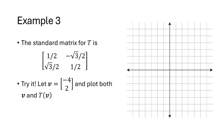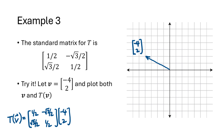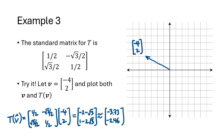Let's verify this. We plot the vector (-4, 2), multiply it by this matrix, and see where we get after rotating 60 degrees counterclockwise. Multiplying gives the result (-2 - √3, 1 - 2√3), which is approximately (-3.73, -2.46). When we plot that, we see it matches up visually with the idea of rotating this vector counterclockwise by 60 degrees.